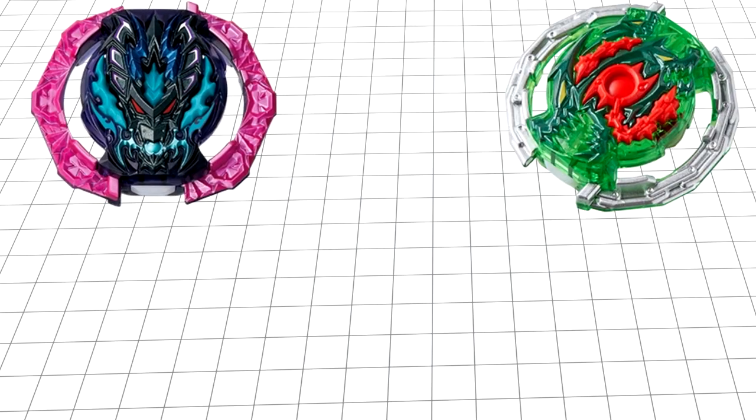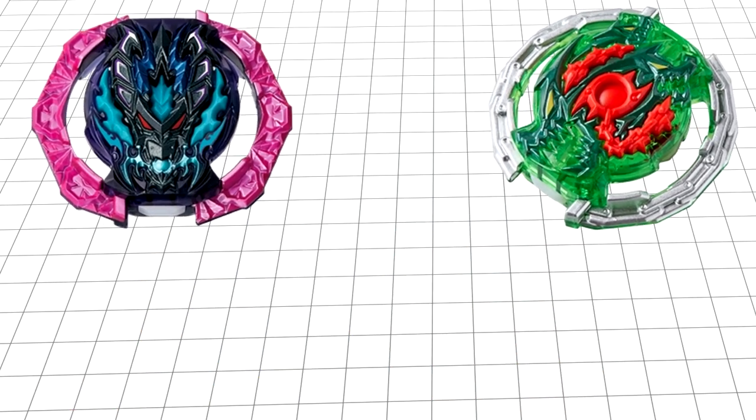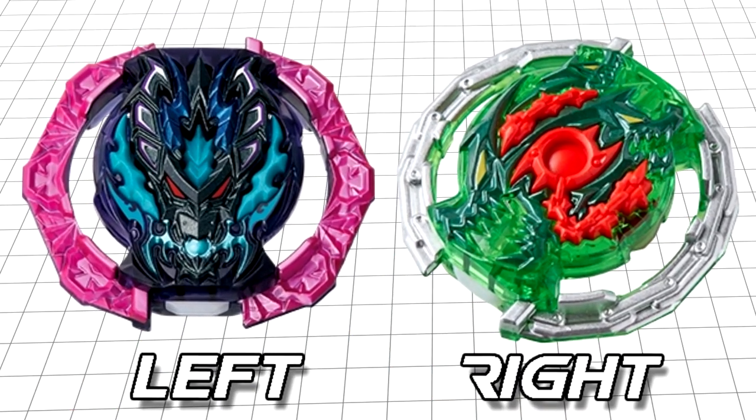There are another few cores worth mentioning for defense for another reason. Those being Bahamut, Curbeus, Valkyrie 1 and Dragon. Bahamut and Curbeus fall into the same niche but for opposite spin directions.